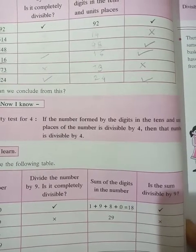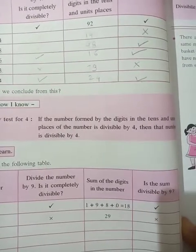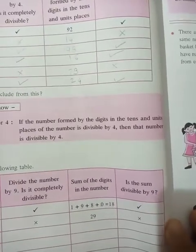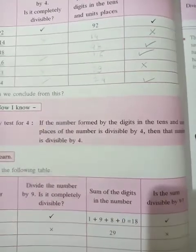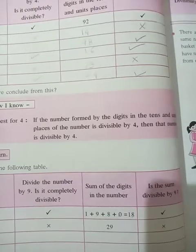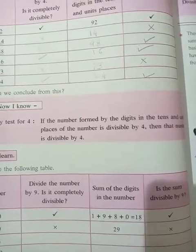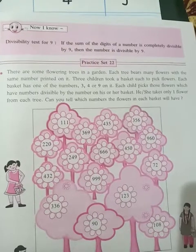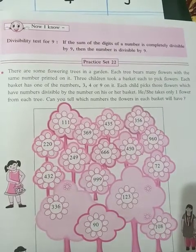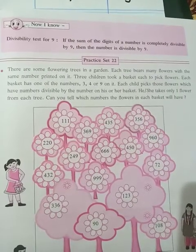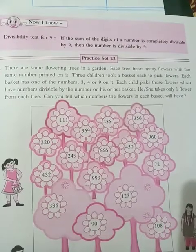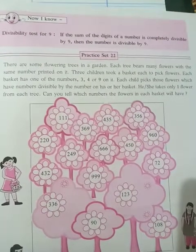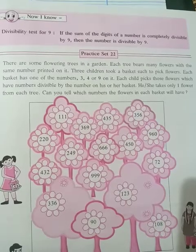If the number formed by the digits in the tens and units place of the number is divisible by 4, then that number is divisible by 4. And also, you had seen the divisibility test for 9. If the sum of the digits of a number is completely divisible by 9, then the number is divisible by 9.